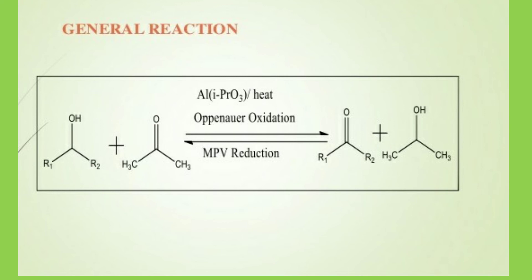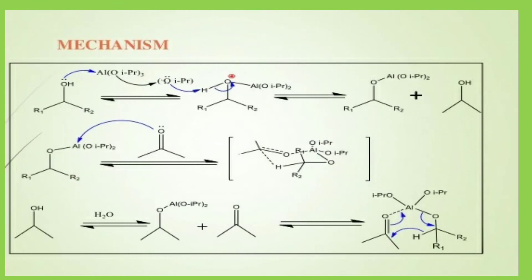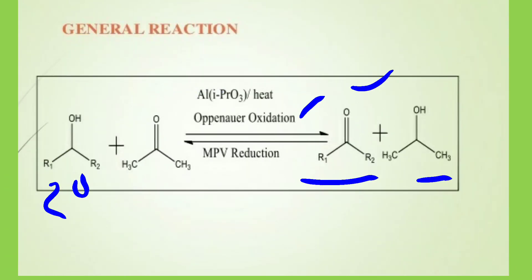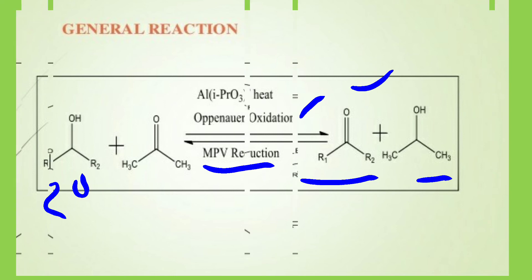Although primary alcohols can be oxidized under Oppenauer conditions, they are seldom used for this purpose due to competing aldol condensation of the aldehyde product. In the general reaction, the secondary alcohol with aluminum isopropoxide on heating gives the ketone, and the ketone gets converted to the alcohol. This is useful only for conversion of secondary alcohol to ketone. Opposite to this, the MPV reduction converts a ketone back to a secondary alcohol.